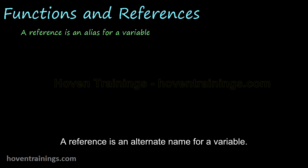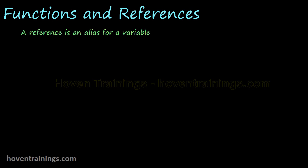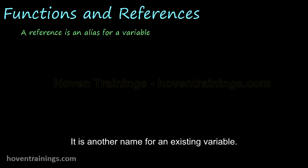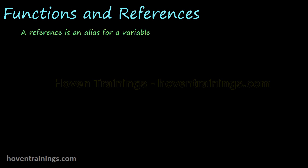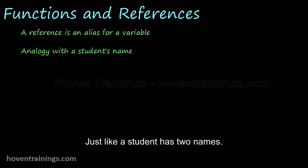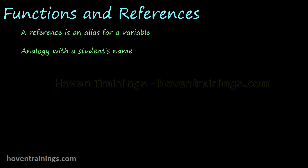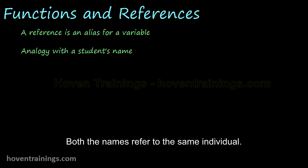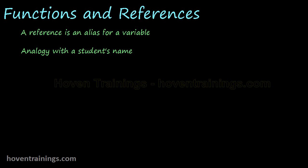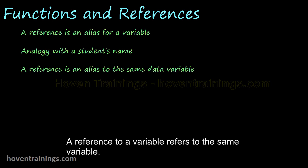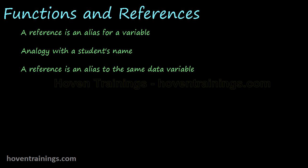A reference is an alternate name for a variable — it is another name for an existing variable. Just like a student has two names: he is called by one name in his school and by another name at home. Both names refer to the same individual. Similarly, a reference to a variable refers to the same variable; it is not a separate variable.